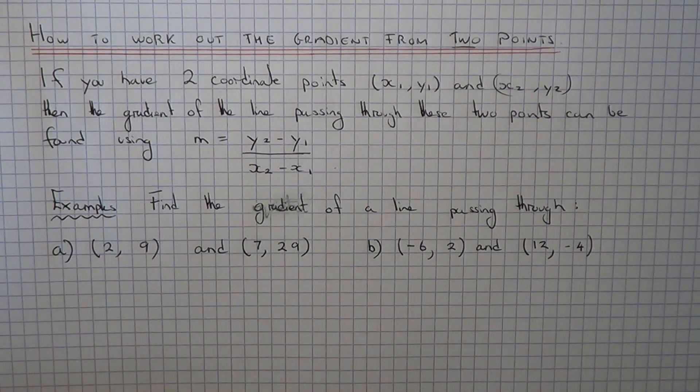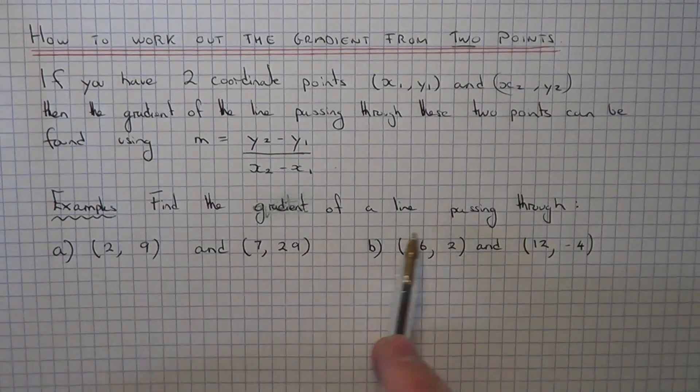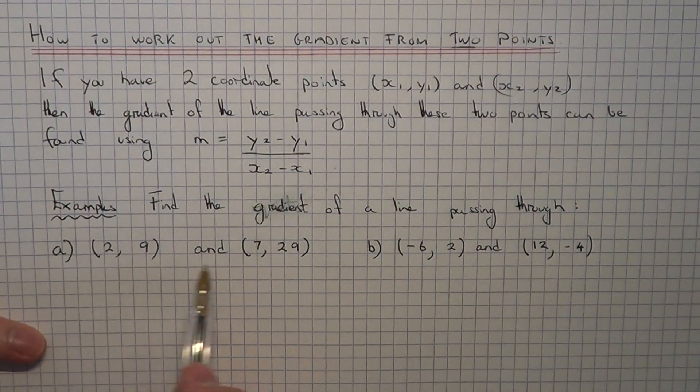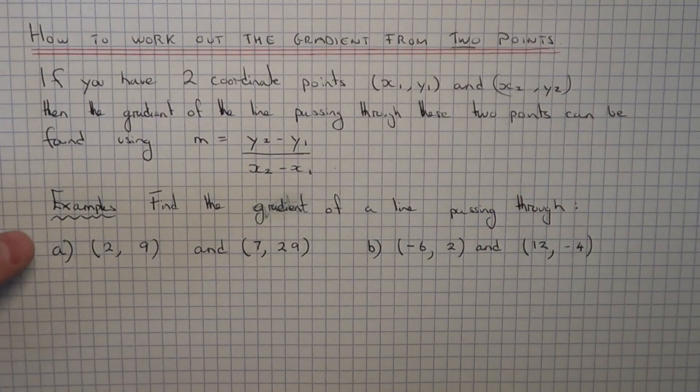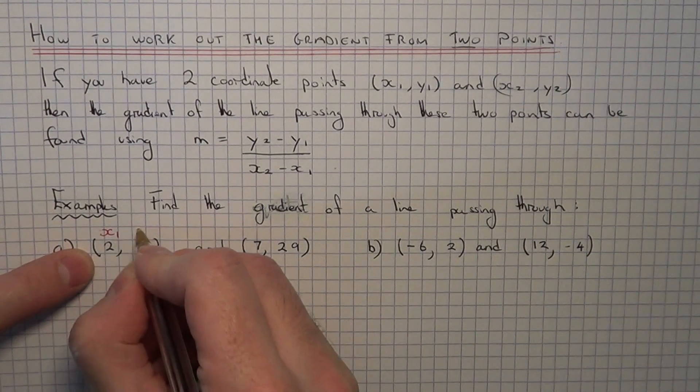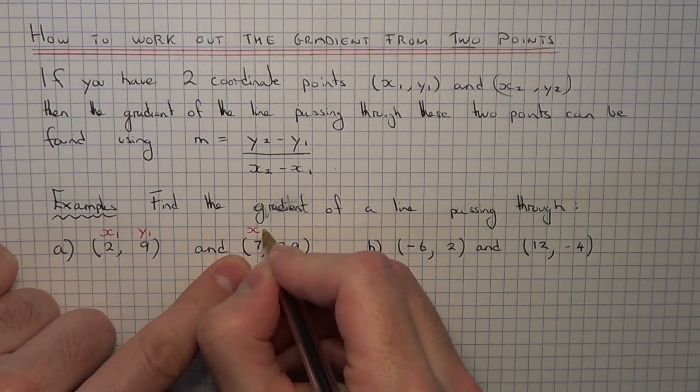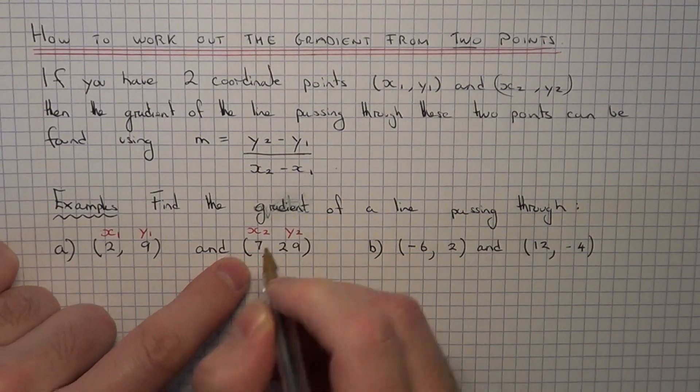So let's have a look at a couple of examples. We've got to find the gradient of a line passing through (2, 9) and (7, 29). So if we label the first coordinate points x1 and y1 and the second coordinate points x2, y2.